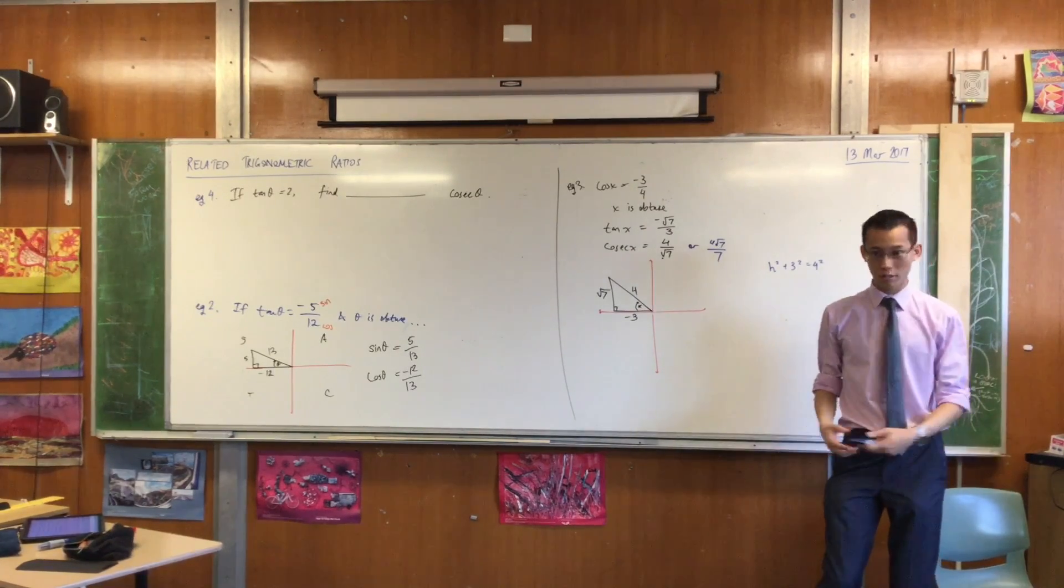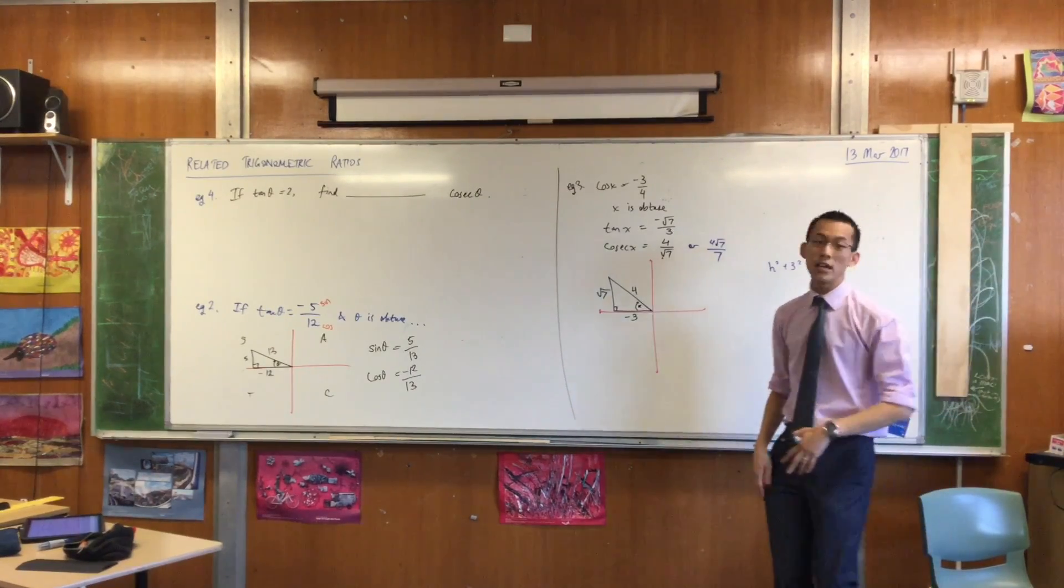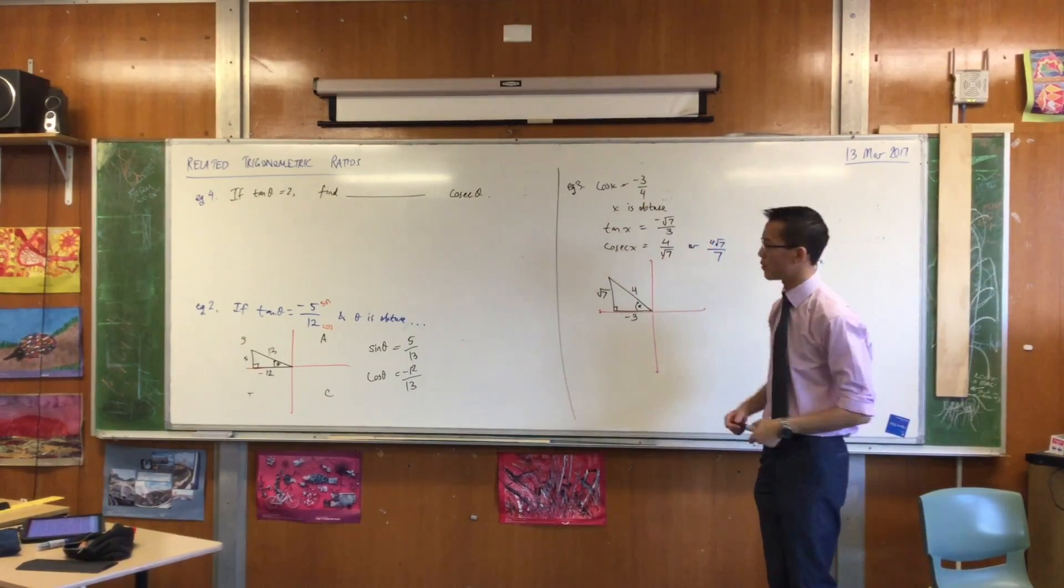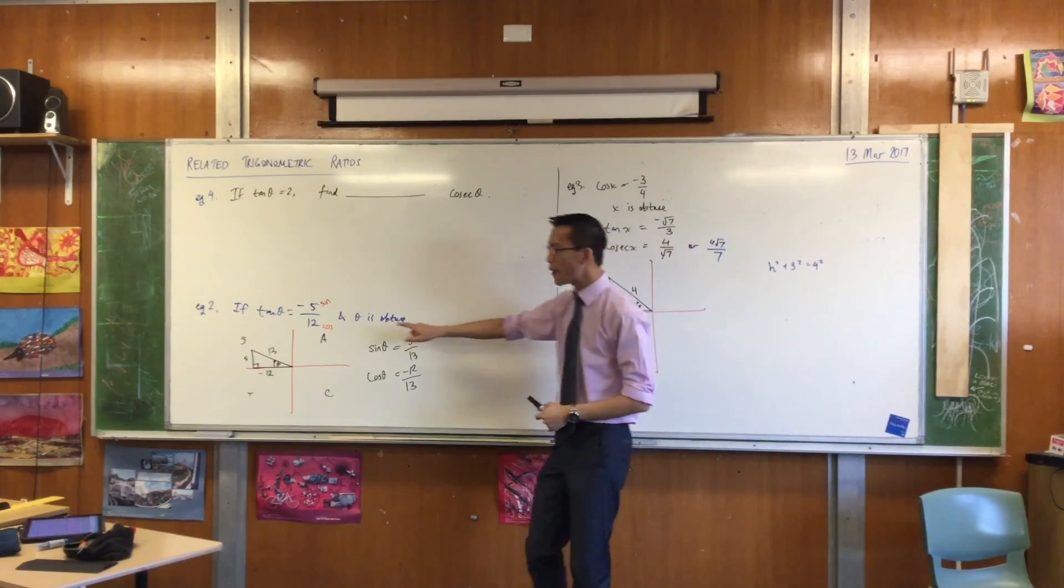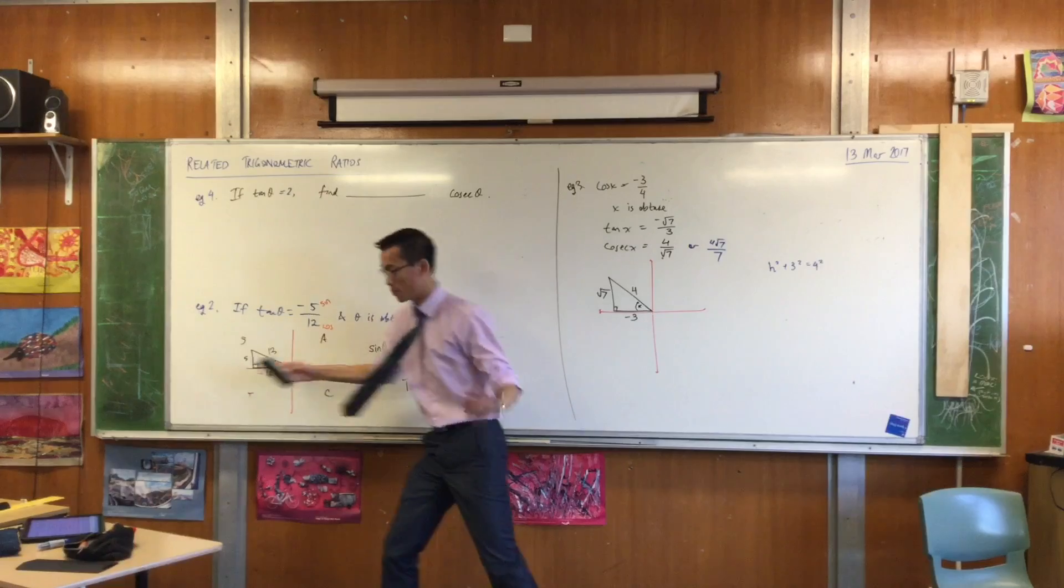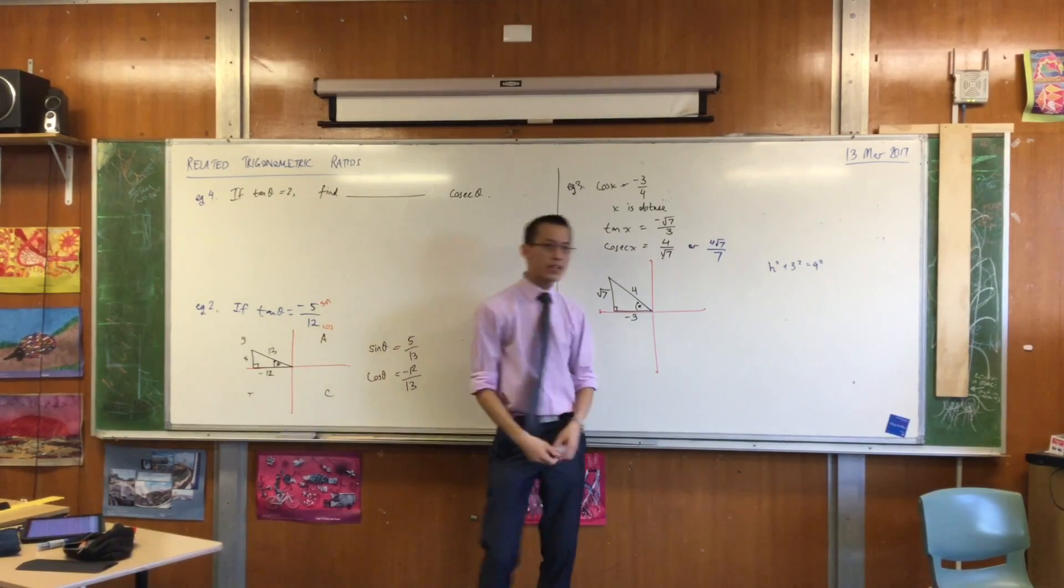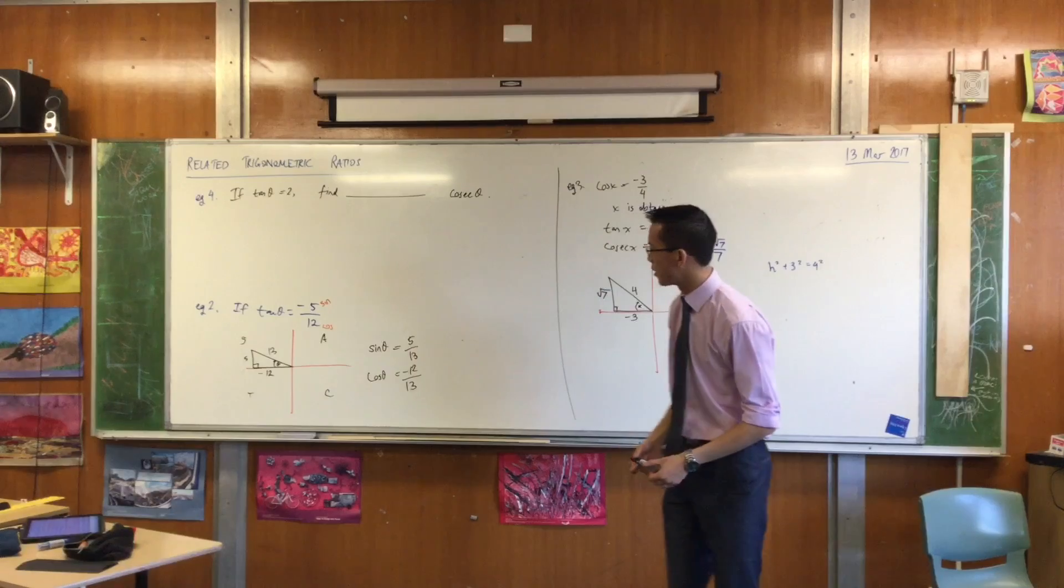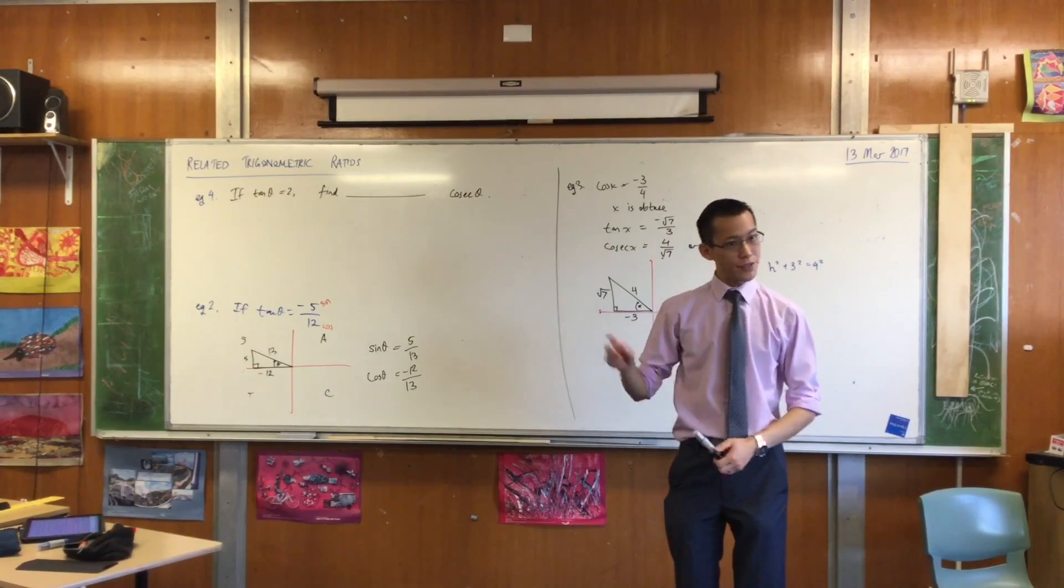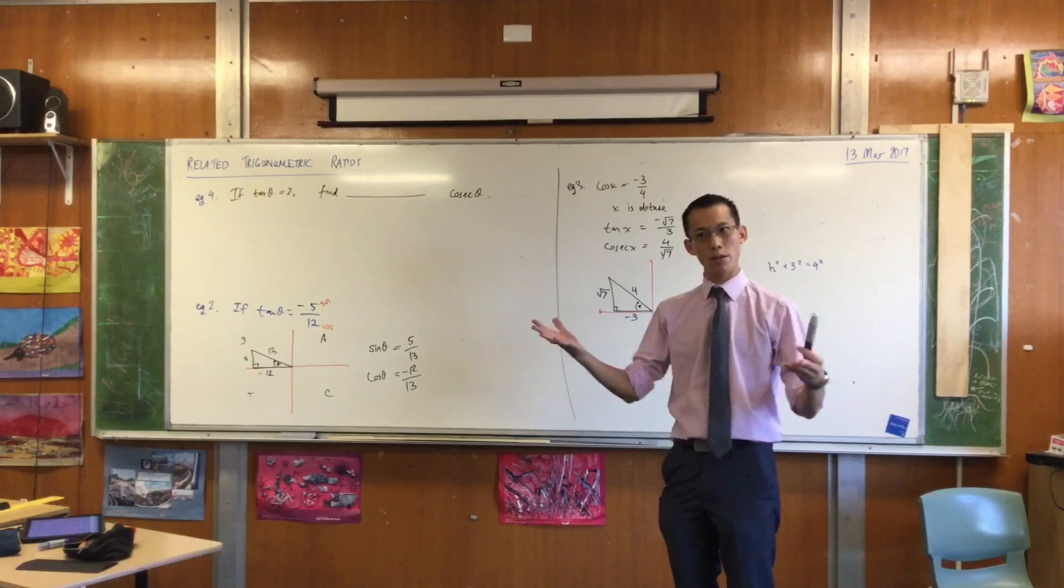There's no restriction, right? I haven't told you theta is over here or over here. Theta, in this question, could be anything. Now, just rewind a little bit. Come back to this question over here. If I took off that restriction, the theta is obtuse restriction, like so, the question changes, right? Because I've got my quadrants on there. If tan theta is that, I'm not necessarily in the second quadrant. Where else could I be?